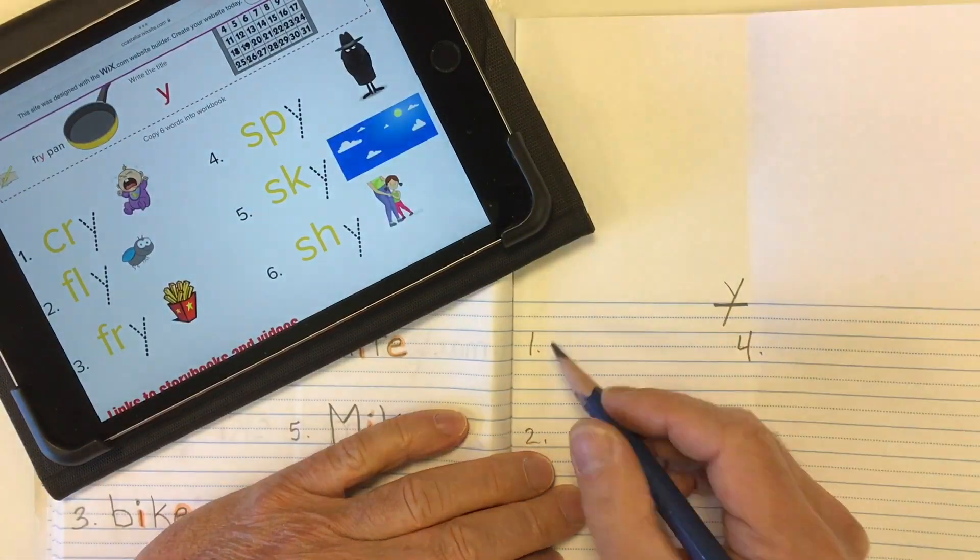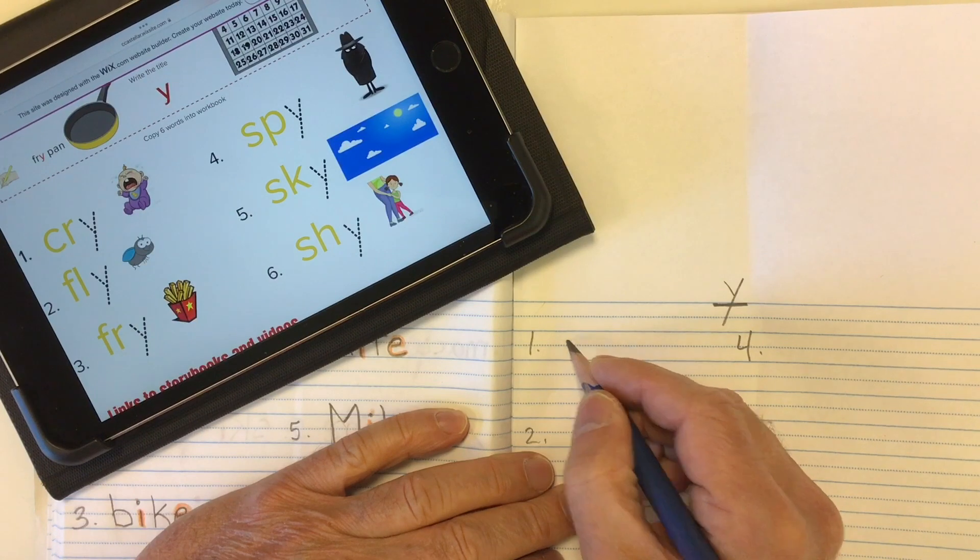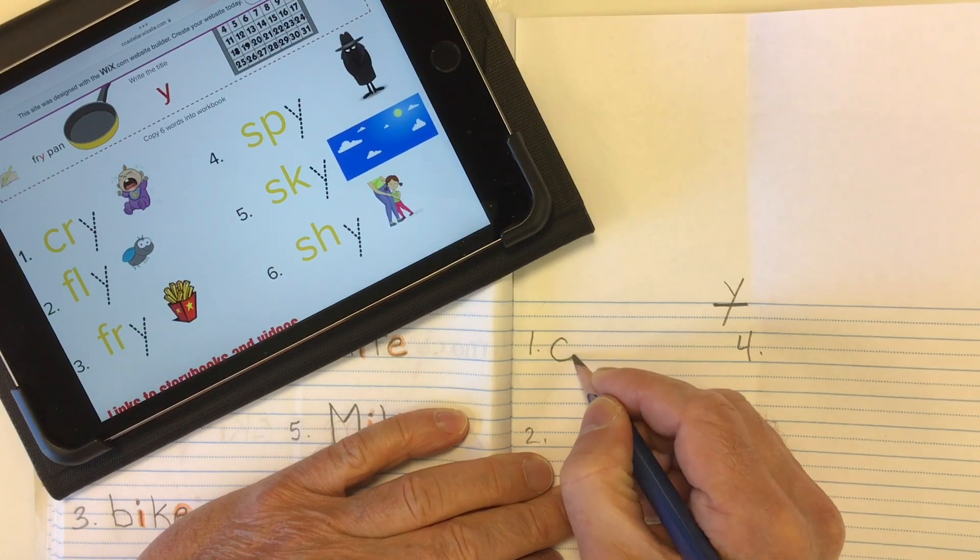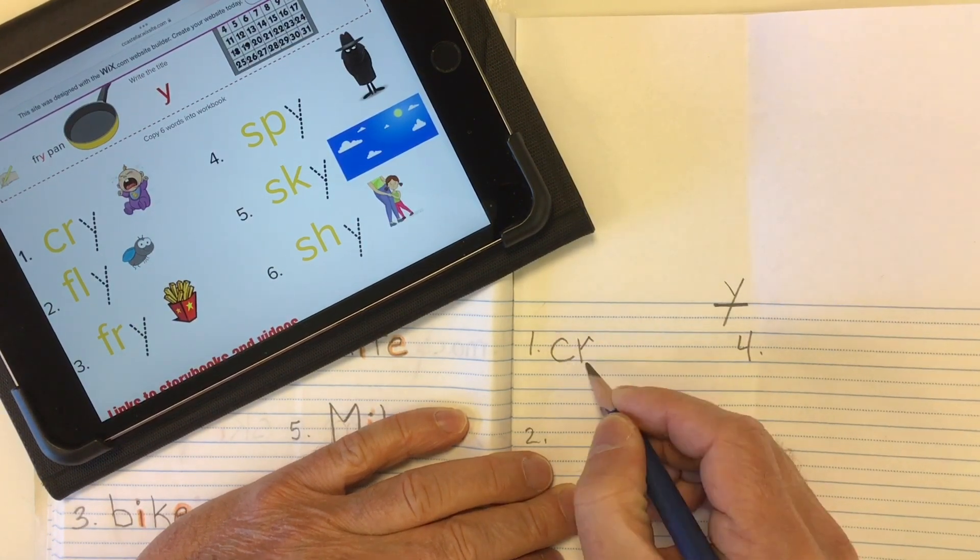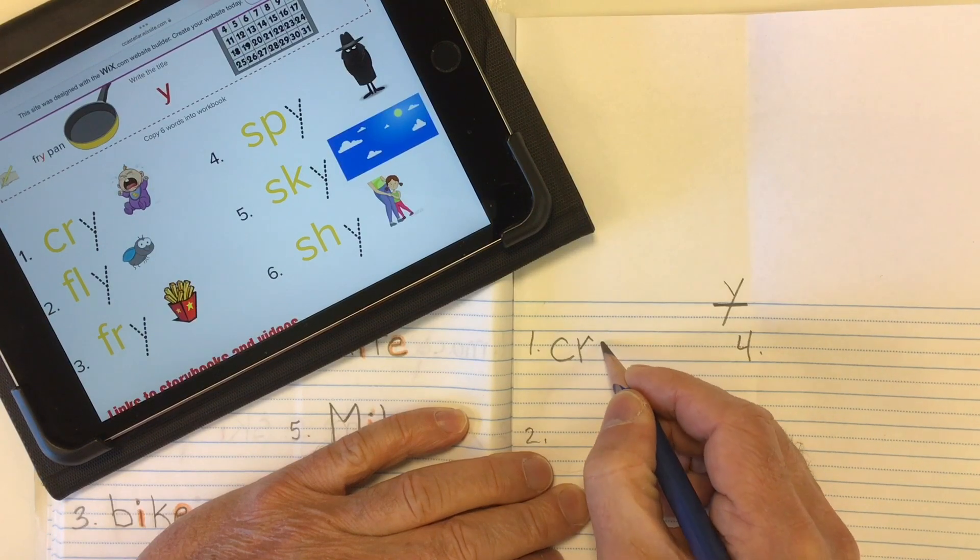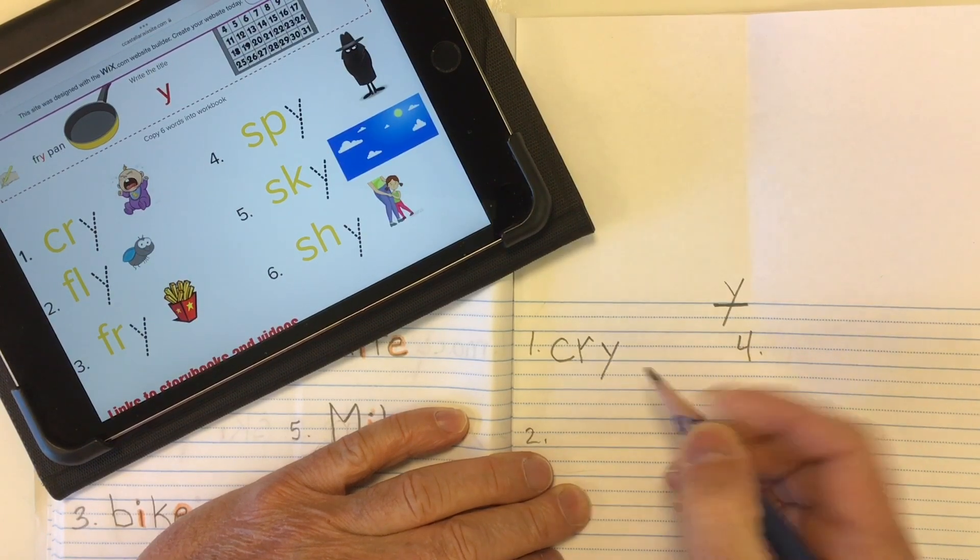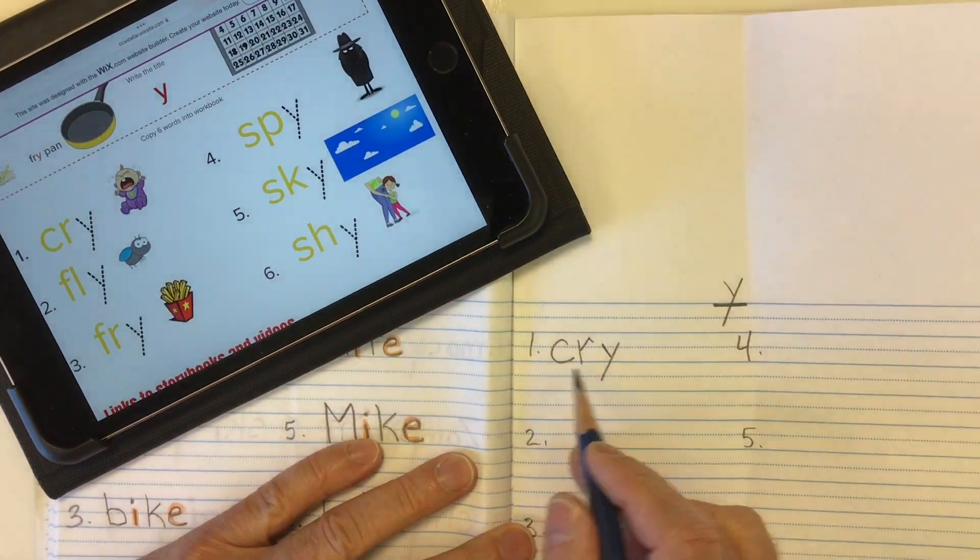So word number one is cry, like a baby might cry, and our cr sound comes from that consonant blend of C-R, cr, cr. And then we get the I sound at the end with this letter Y, cry.